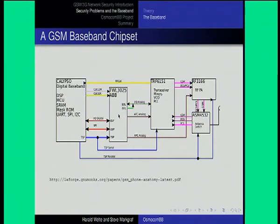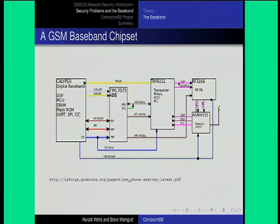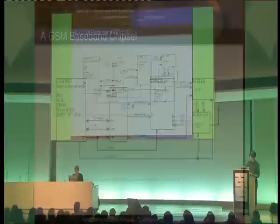This contains the analog-digital converter and digital-analog converter to interface between the digital domain on the left-hand side and the analog domain on the right-hand side. Here we have the RF transceiver mixer, VCO, and PLL — the device that converts the analog baseband signal and converts it up into the respective frequency bands for GSM 900 MHz or DCS/PCS 1800/1900 MHz. We have a power amplifier that amplifies the signal when we transmit, and we have an antenna switch because there's only a single antenna — in this case it's a tri-to-quadband design.